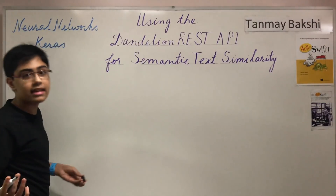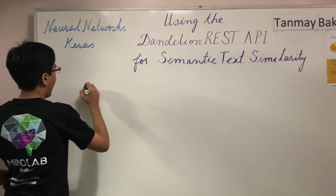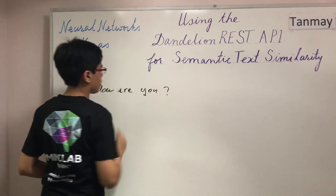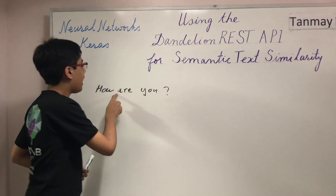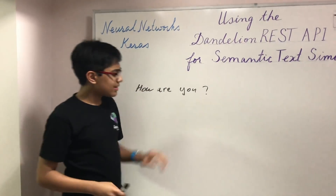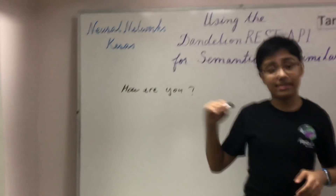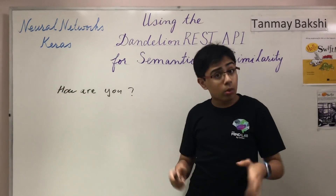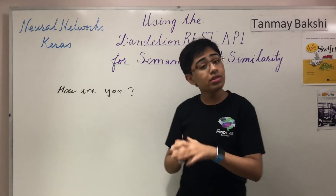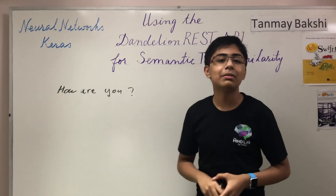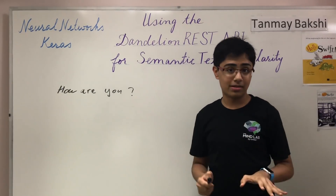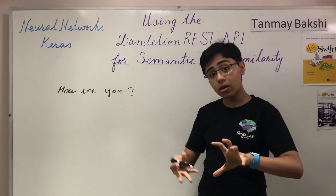Let's say you've got a sentence like 'How are you?' — tokenized, so there's a space between each word and the question mark. How can a deep learning algorithm understand this sentence? The way it does this is by first converting these words to vectors — word vectors. I'd also recommend you check out a separate video I'll be posting about word vectors and how exactly they work. In essence, word vectors allow you to represent the semantic meaning of words within vectors.